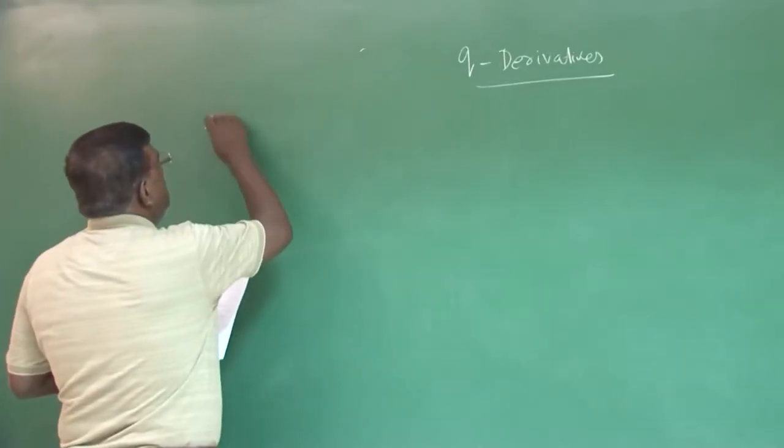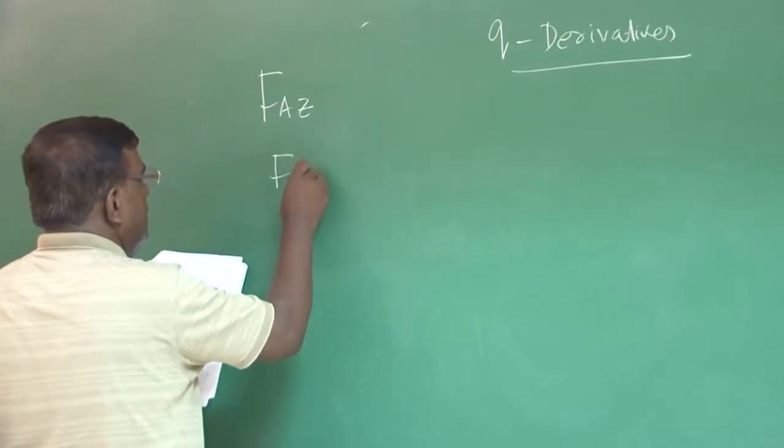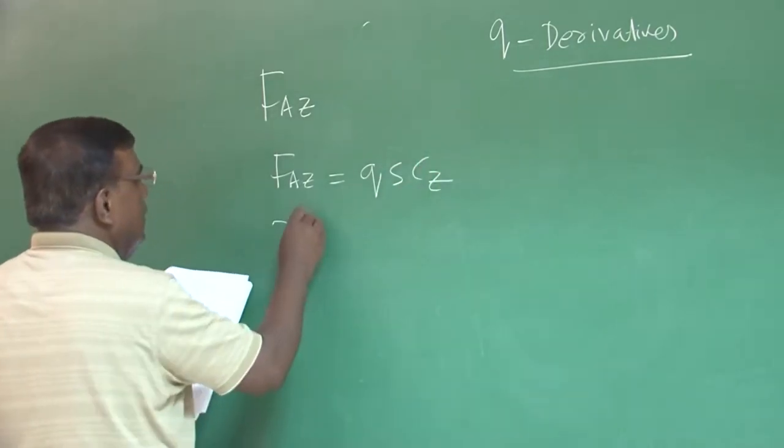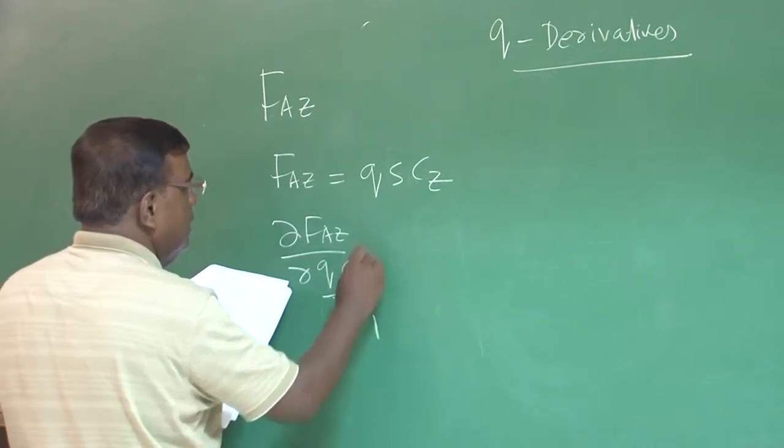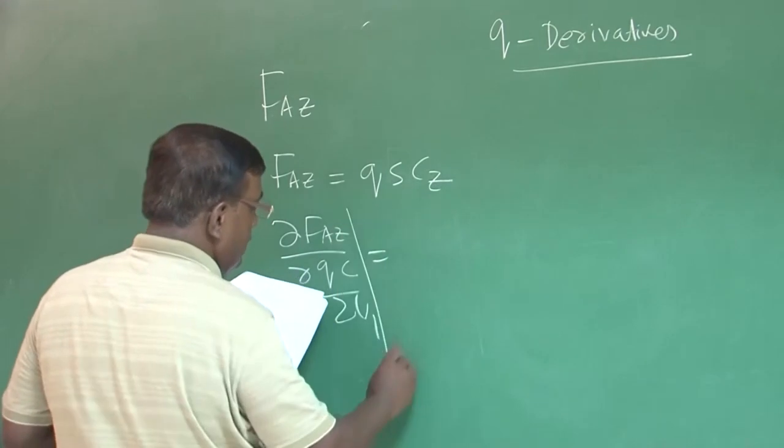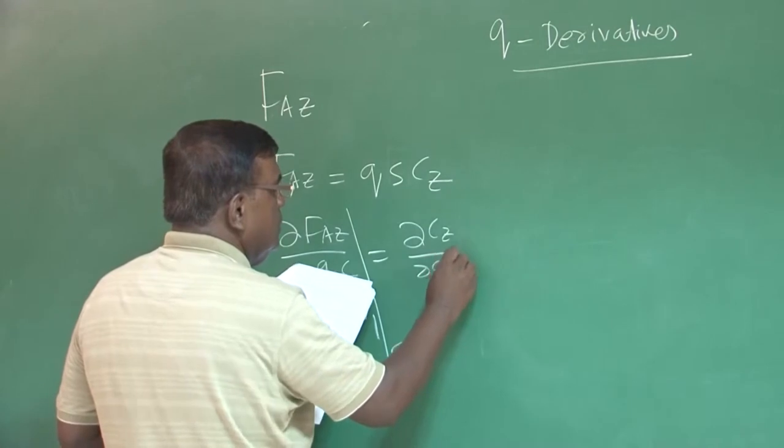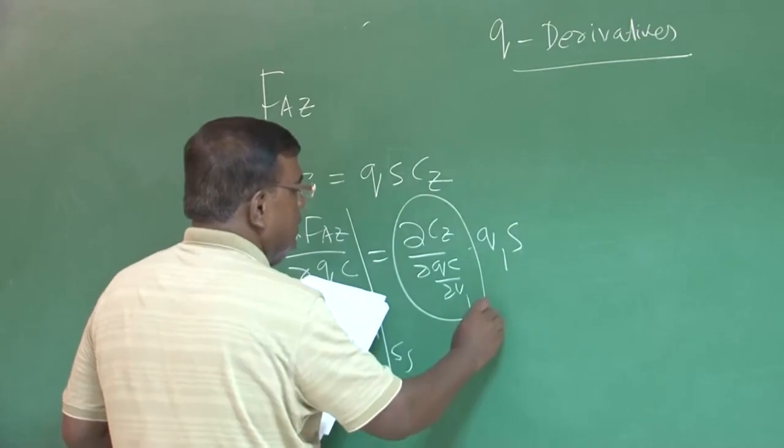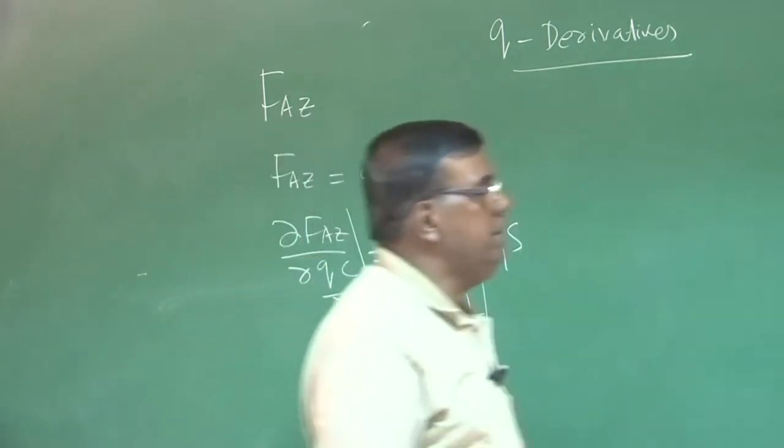Now, we will handle FAz and we again write FAz as Qs Cz and dFAz by dQc by 2u1 into Qs. The catch point is how to evaluate dCz by dQc by 2u1. Now, let us see, what is actually happening?